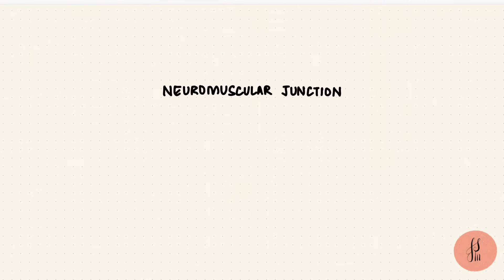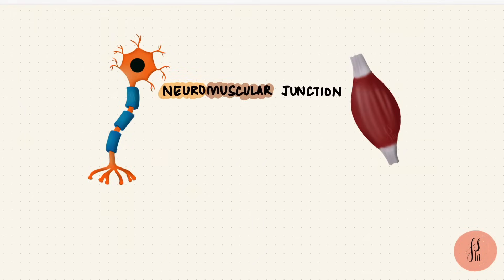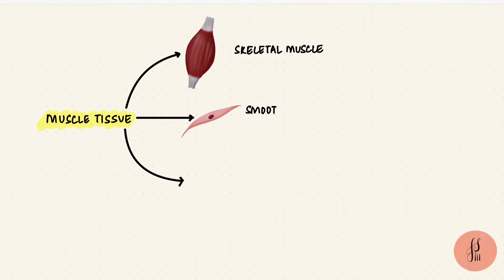If we just look at the name, it's obviously a junction between nerve and muscle. It's also called the myoneural junction. There are different kinds of muscle cells: skeletal, smooth, and cardiac muscles.